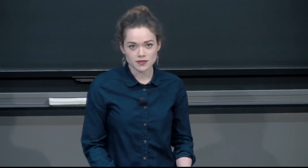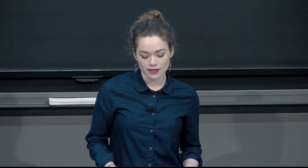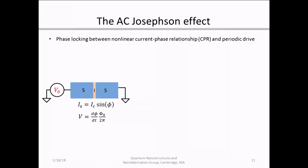Perhaps the most common example of that is the AC Josephson effect. That's due to phase locking between the nonlinear current-phase relationship of the Josephson junction and an applied external periodic drive. Here I've shown a basic schematic of a Josephson junction along with its constitutive equations, currently with just a steady DC voltage bias applied.